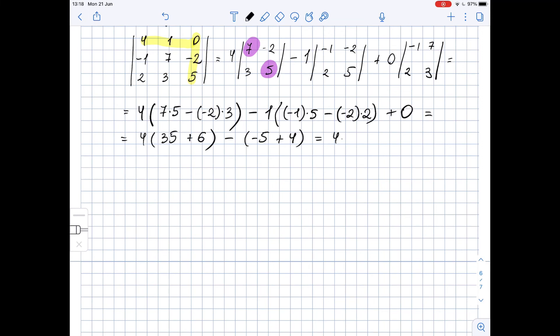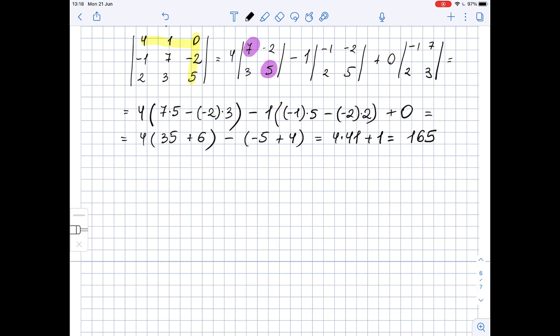Well, we get 4 times 41 minus negative 5 plus 4 is negative 1. So minus negative 1 is plus 1. And 4 times 41 is just 164. 164 plus 1 is 165.